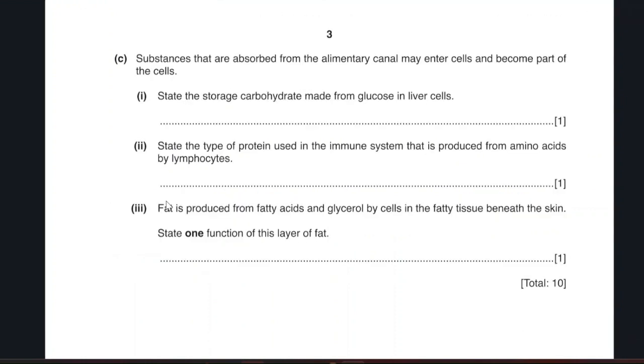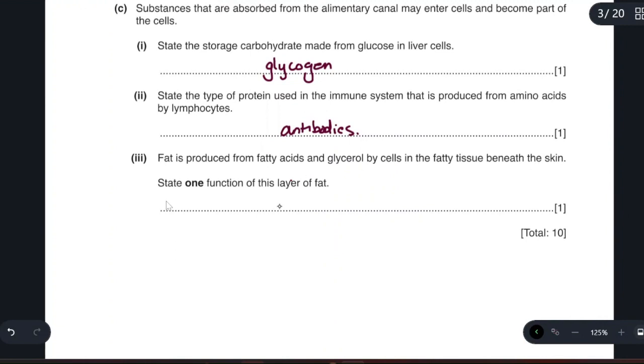Substances that are absorbed from the alimentary canal may enter the cells, become part of the cells. State the storage carbohydrate made from glucose in the liver cell. Glucose is stored as glycogen. State the type of protein used in the immune system that is produced from amino acids by lymphocytes. The fat produces antibodies which are made of proteins and they fight the pathogen. The fat is produced from fatty acids and glycerol by cells in the fatty tissue. One function of the layer of fat, layer of fat under the skin is an insulator, acts as insulation of heat.